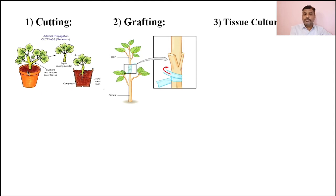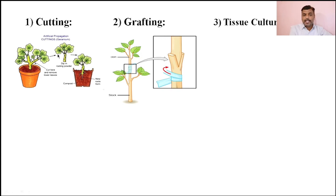Cutting is the simplest method of artificial vegetative reproduction in which a vegetative part of the mother or host parent is detached — it may be the stem, leaf, or root. Whatever part is convenient for vegetative reproduction is detached from the mother plant. In this diagram, the stem is cut from the mother parent, and that detached part is kept into the soil. Generally the lower buds are kept inside the soil while the upper buds remain above the soil. From the lower buds, adventitious roots develop, and from the upper buds, the vegetative shoot system develops.